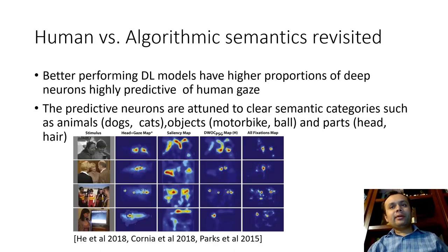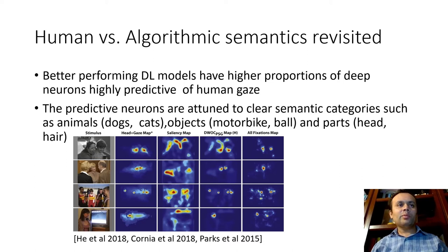That said, there are still a number of things that we can generalize or learn from these methods. A number of studies have shown that better performing deep learning models have higher proportion of deep neurons highly predictive of human gaze. So, it shows that there is some similarity between what these models are recognizing and how humans are recognizing these images. But that, again, that's not always the case.